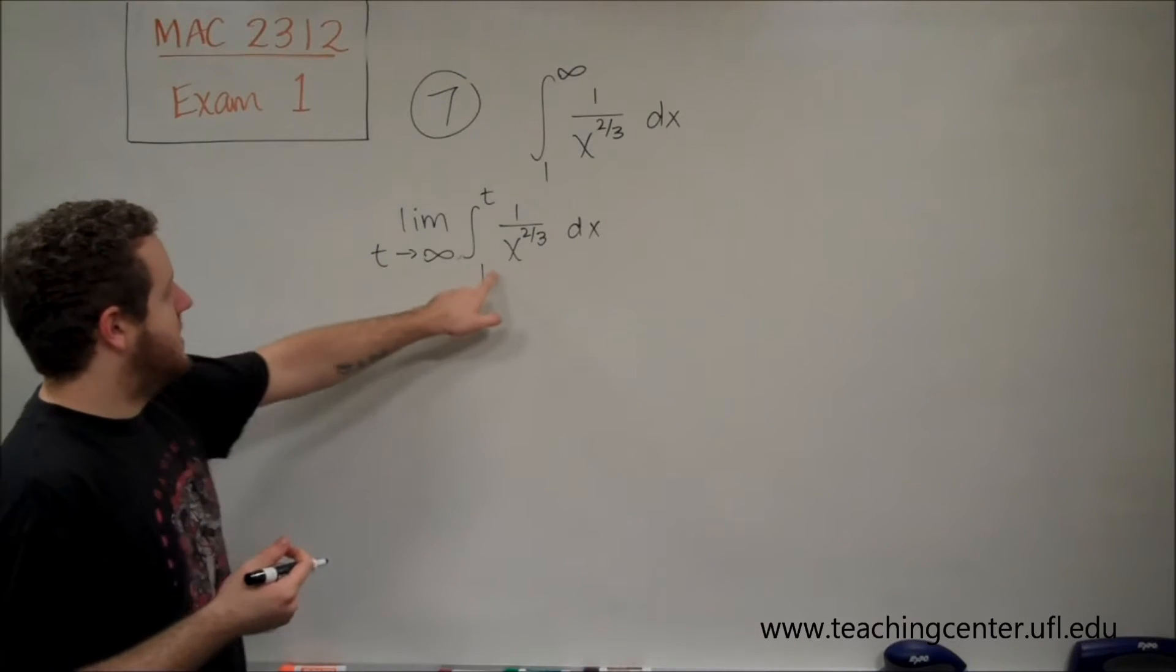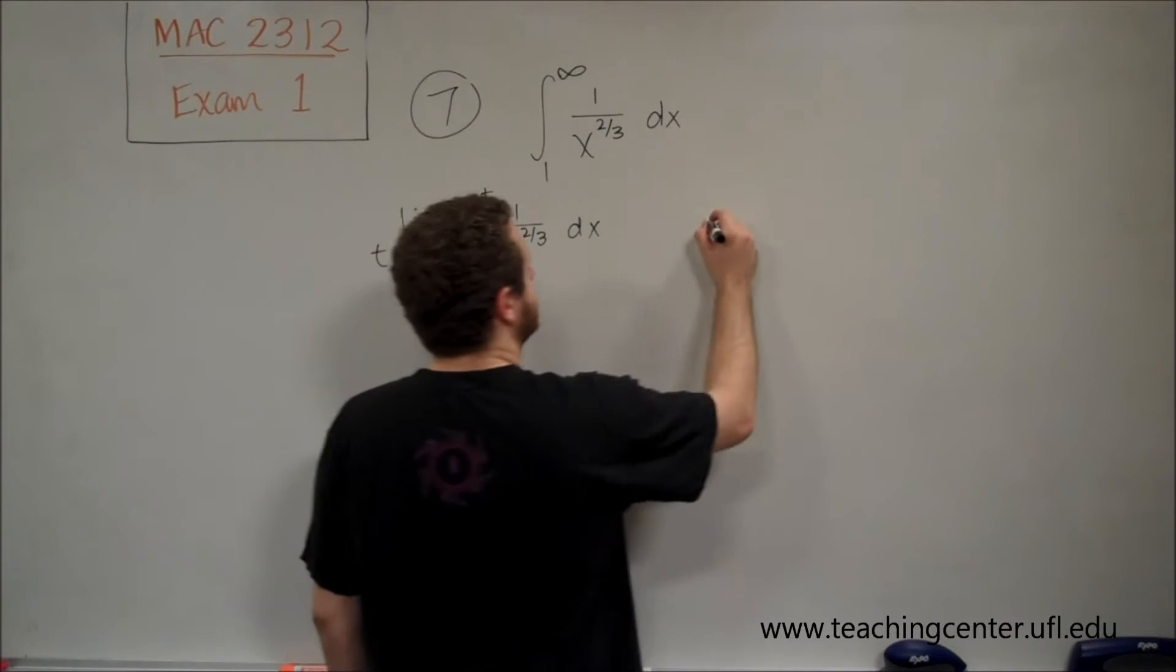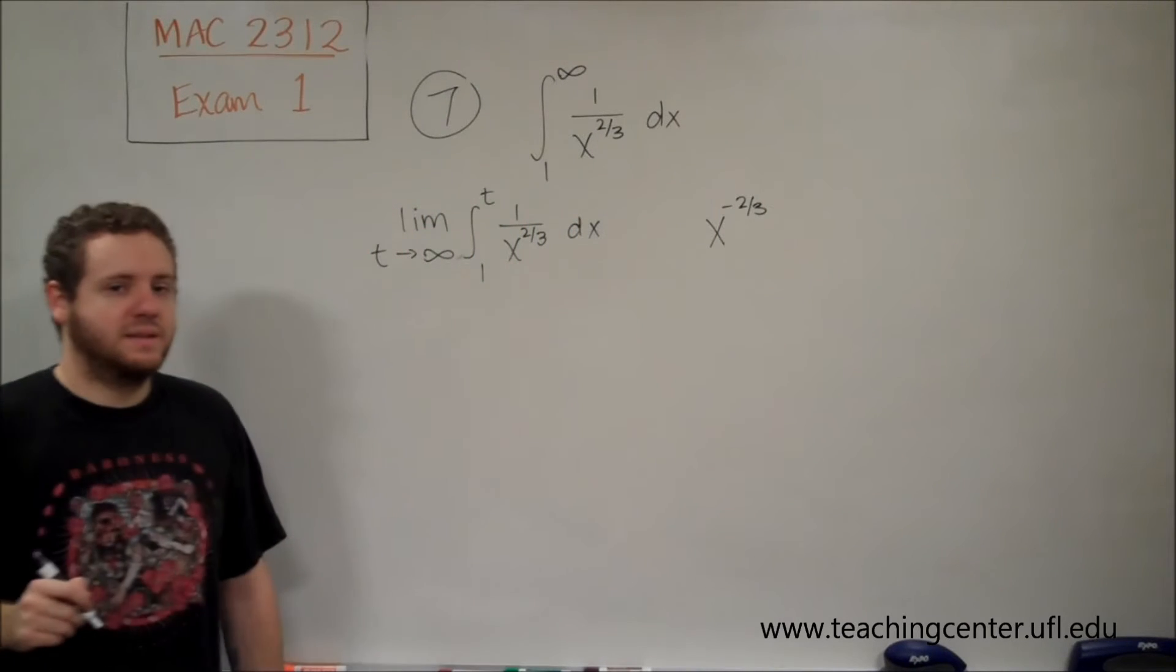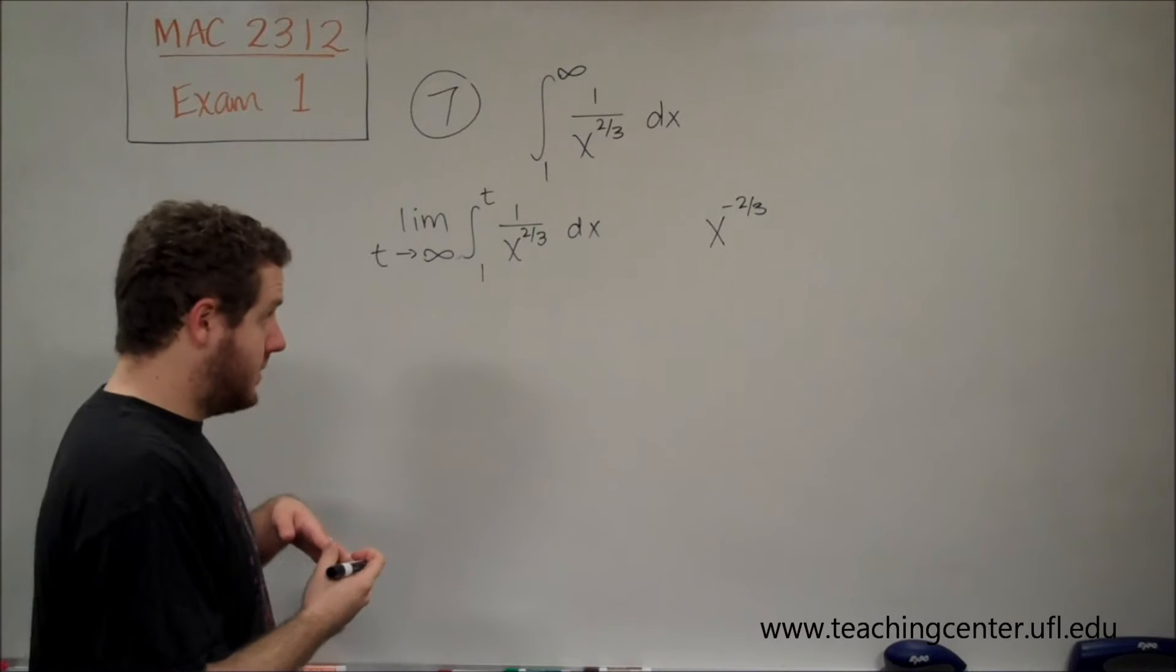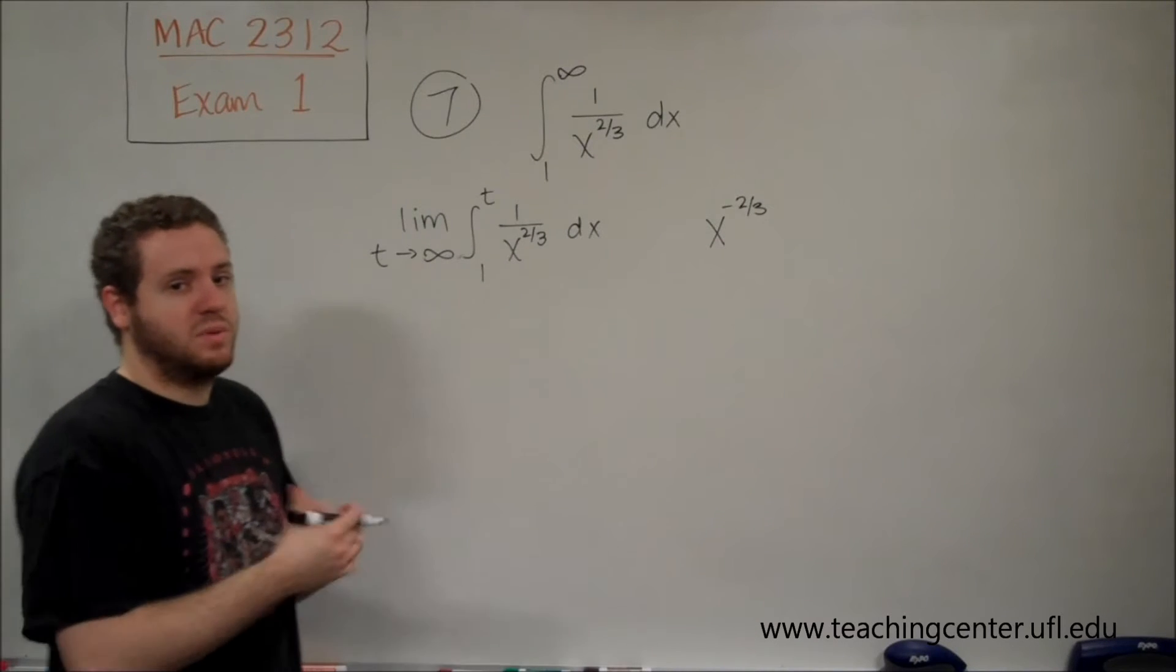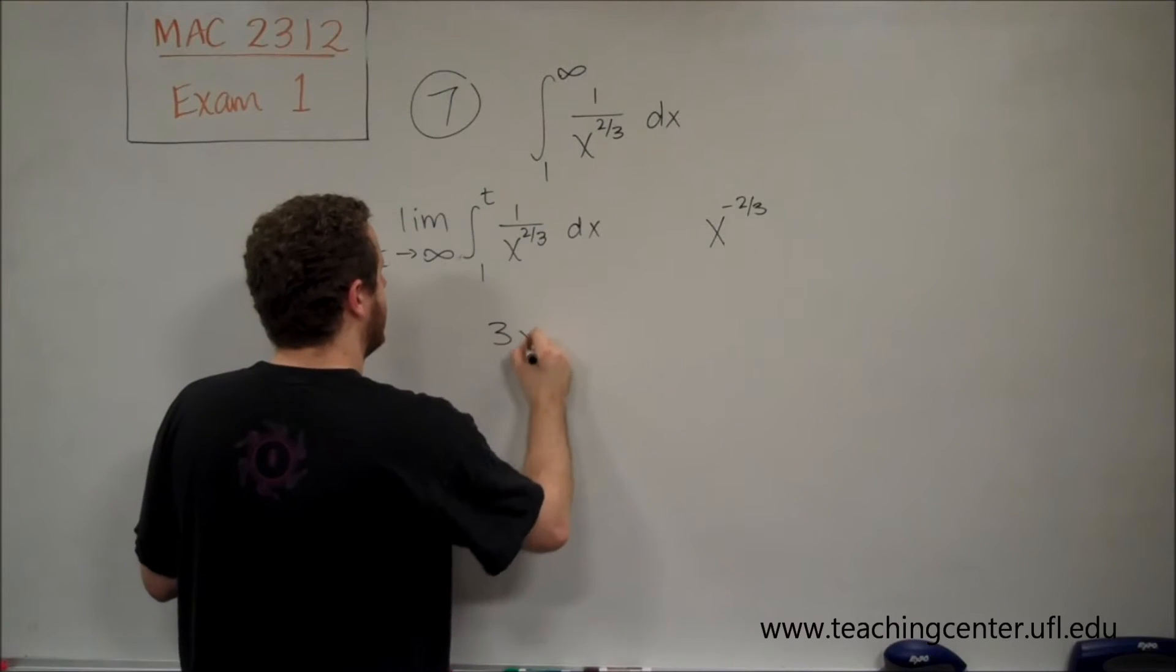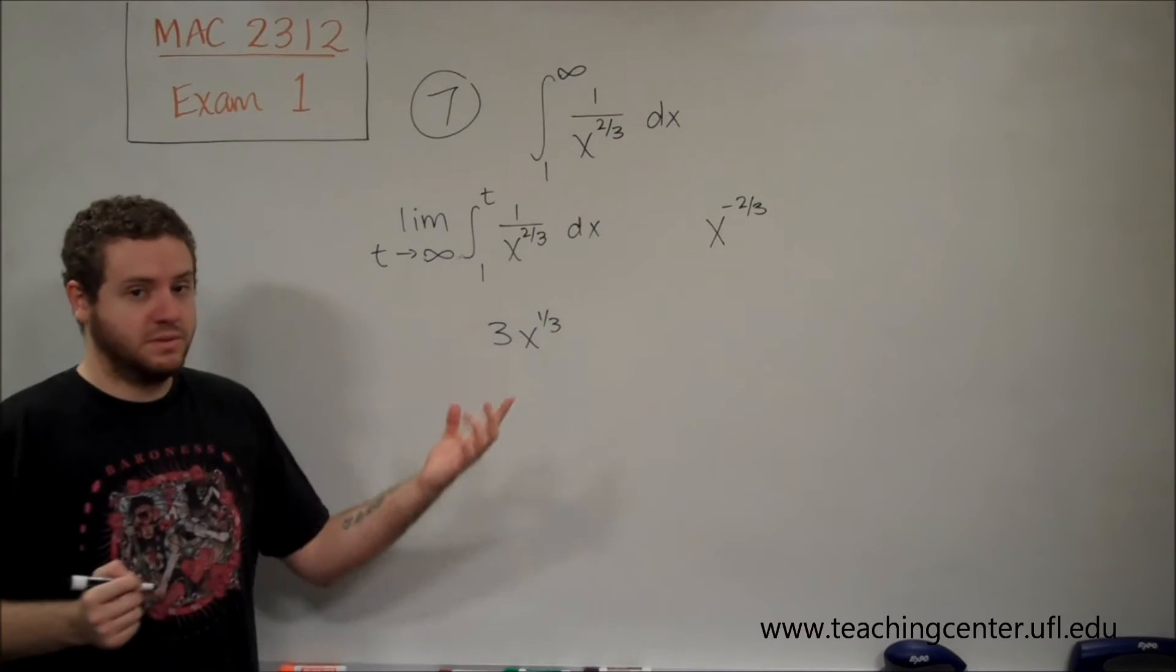To evaluate this, we need to take the antiderivative of that function. Remember, this is x to the negative 2/3. If we're going to use our antiderivative power rule, we just add 1 to that and divide by the new power, which in this case is 1/3, and dividing by 1/3 is the same thing as multiplying by 3. We get 3x to the 1/3, and that's our result.